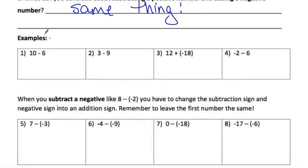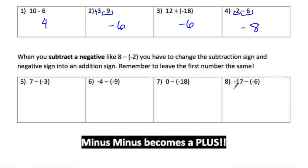Looking at the examples: 10 minus 6 equals 4. For 3 minus 9 — positive 3, different signs, find the difference: 9 minus 3 is 6, and the bigger absolute value is negative, so negative 6. Same signs means add them to get 8. When you subtract a negative, like 8 minus negative 12, change the minus-negative to a plus sign — leave the first number alone, so minus-minus becomes plus. Both minus signs become one plus sign: 7 plus 3 is 10. Negative 4 plus 9: different signs, difference is 5, positive because 9 has greater absolute value. Zero plus 18 is 18. Negative 17 plus 6: subtract to get 11, stays negative.